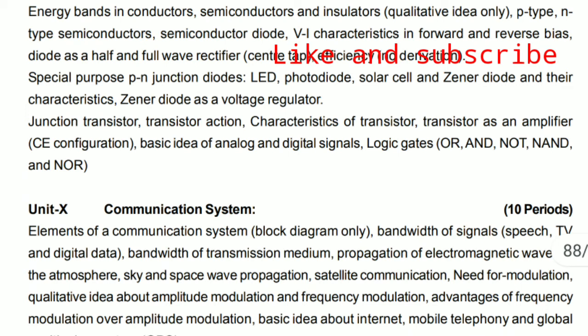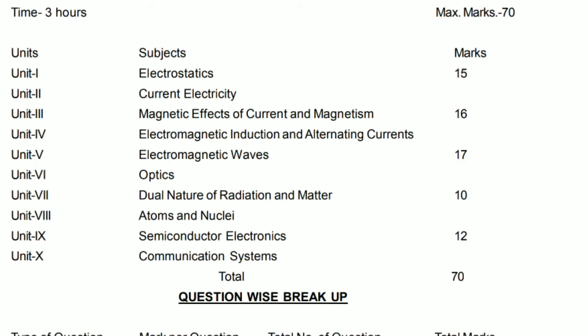Unit 10 is Communication Systems. We discuss the elements of a communication system, bandwidth of a signal, frequency modulation, amplitude modulation, demodulation, GPS, mobile telephony, and the internet. Units 9 and 10 together carry 12 marks in the final examination.